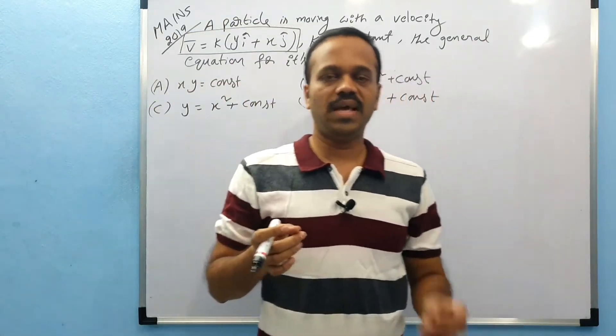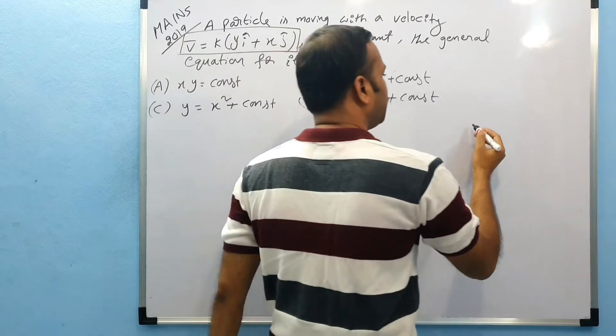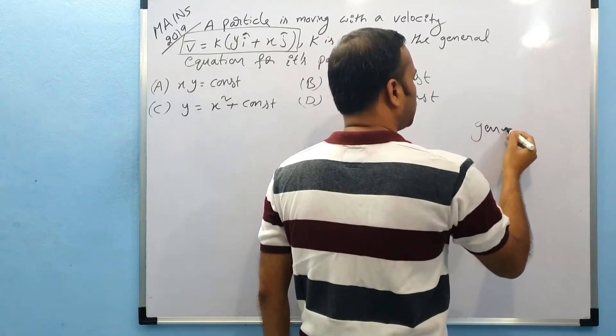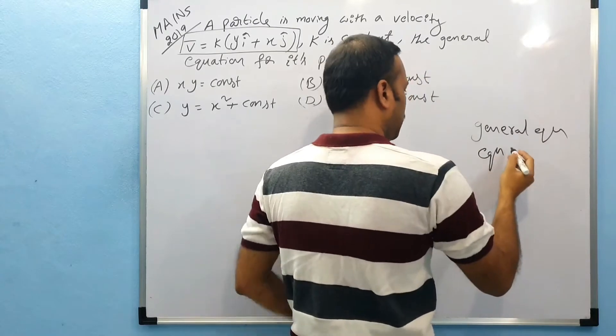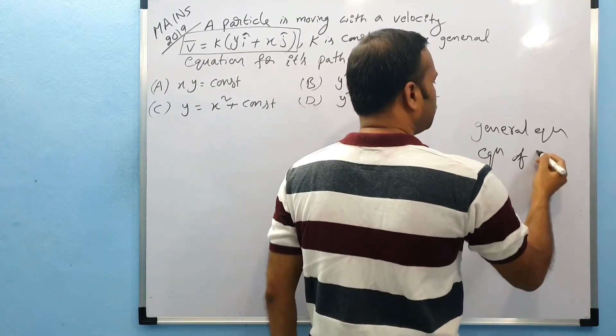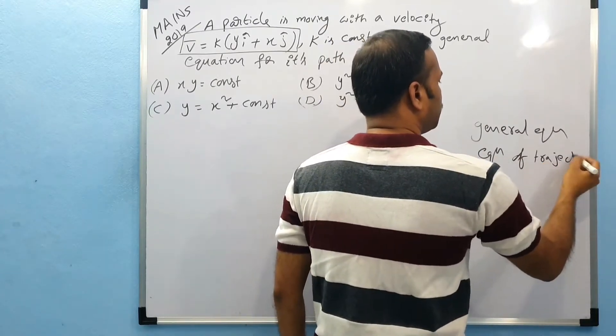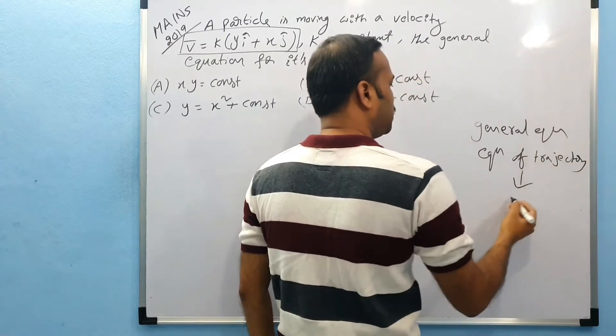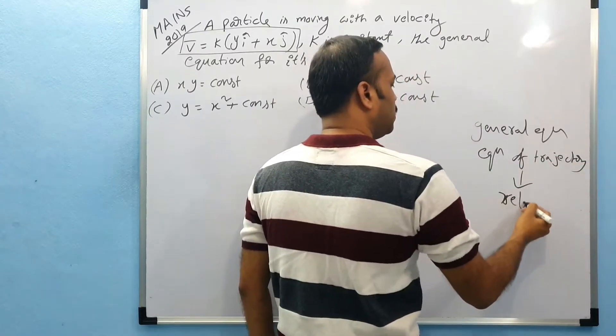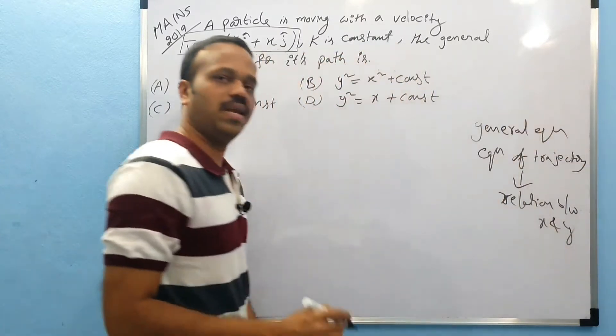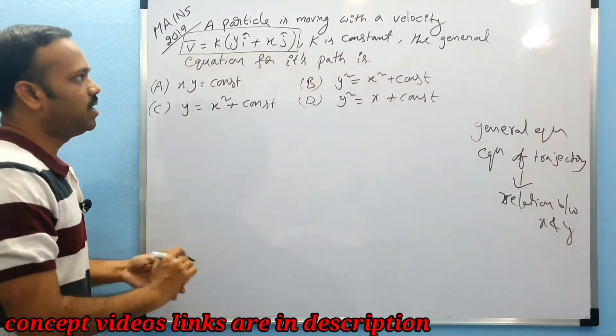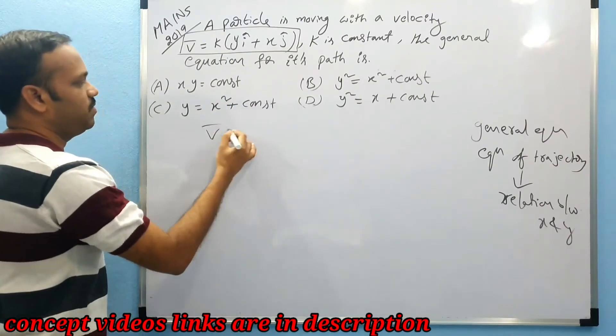General equation means they are asking the relation between x and y. Whenever they ask the general equation or equation of trajectory, what does it mean? They are asking relation between x and y. So let's take the velocity v̄ equals k y î plus k x ĵ.